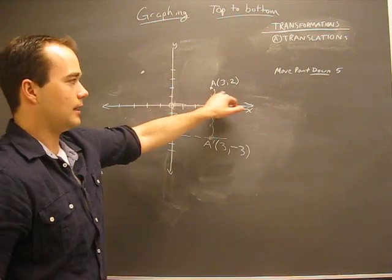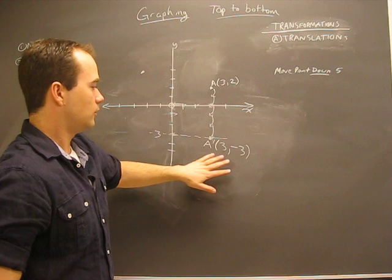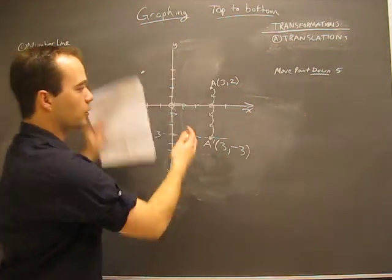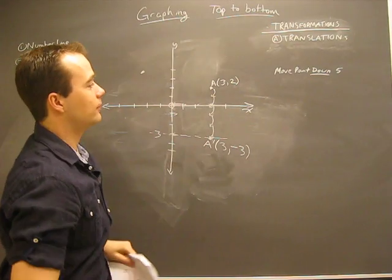So if we have this and then we move the point down five, we end up here. Well, what if this is too big for us to graph? Like what if we're dealing with numbers way off the graph? Here's what we can do.